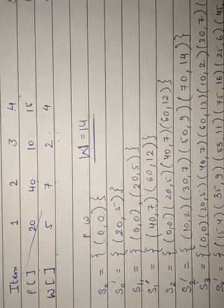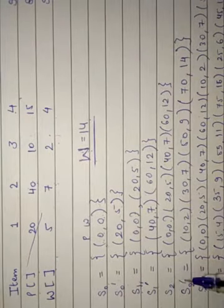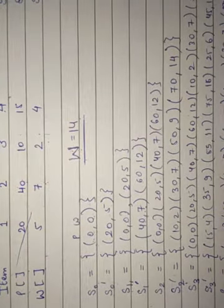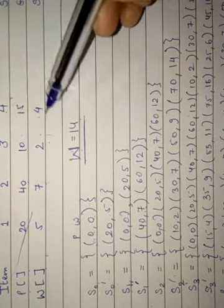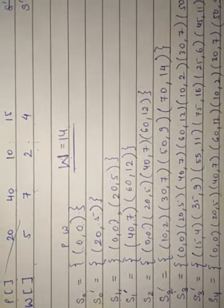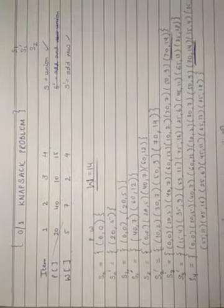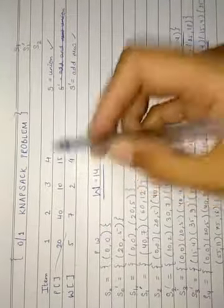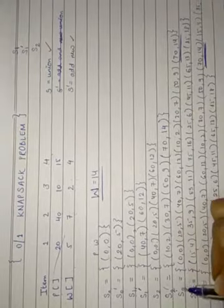Next is S3. For S3, we union the values of S2 and S2-dash. For S3-dash, we add our last element (15,4) into the values of S3. Now we have all values up to S3 and all elements are covered. For S4, we union the values of S3 and S3-dash, giving us all the combined points.